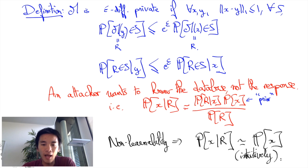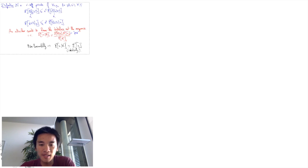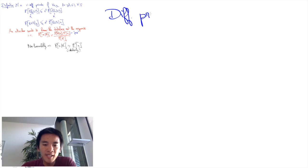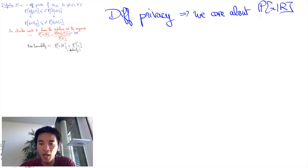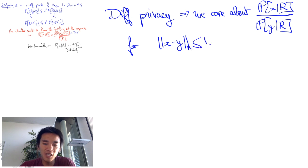Now, differential privacy actually rather cares about the difference of beliefs with respect to databases that only differ by the presence or absence of few users. This means that differential privacy actually asks whether an attacker will much better know a posteriori how much x is more likely than y, i.e. it attempts to bound the probability of x given R divided by the probability of y given R.